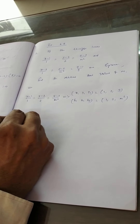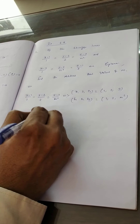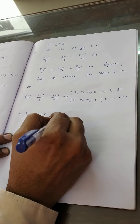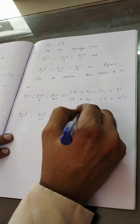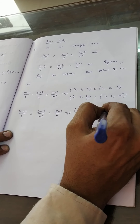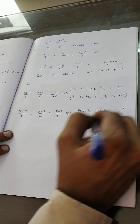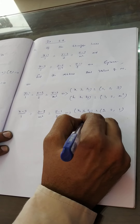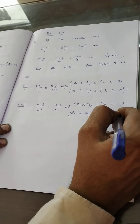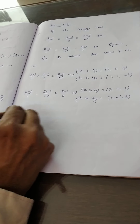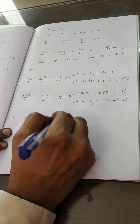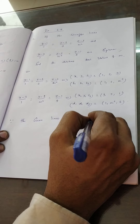Similarly, for the second line (x−3)/1 = (y−2)/m² = (z−1)/2, the point (x2, y2, z2) is equal to (3, 2, 1) and the direction vector (d1, d2, d3) is parallel to (1, m², 2).